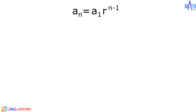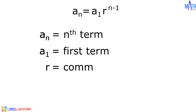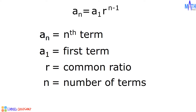In this formula, a sub n is the nth term of the geometric sequence, a sub 1 is the first term, r is the common ratio, and n is the number of terms. Now that we know the formula, let us have examples.